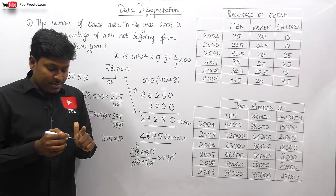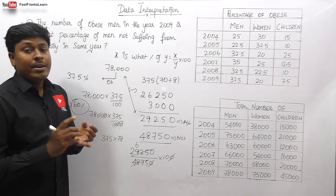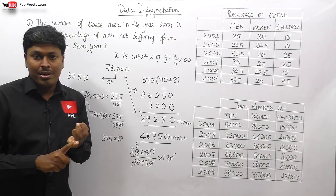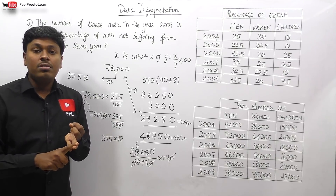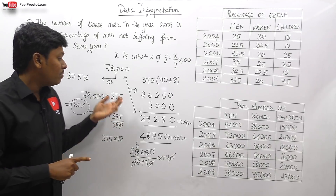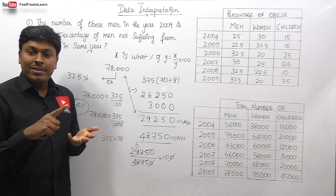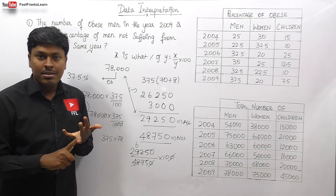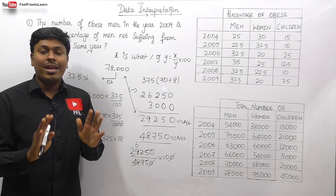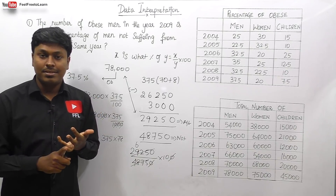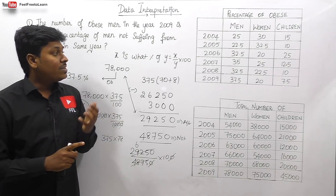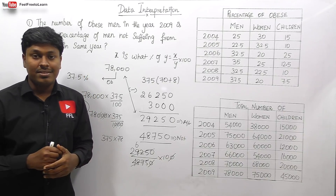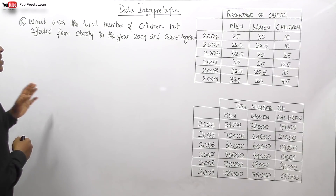Friends, in this DI we need to understand the concept clearly — that is most important. Secondly, we should not use the normal traditional method to multiply numbers. Always be faster in multiplying; follow any other method but calculate multiplication terms faster. Finally, the answer for question number one is 60%.